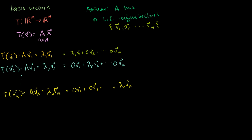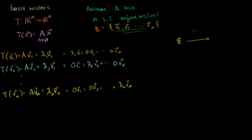So let's say we define this as some basis B, equal to those eigenvectors. What I want to show you is that when I do a change of basis, in standard coordinates you give me some vector in R^n, I multiply it times A, and you get the transformation of it.